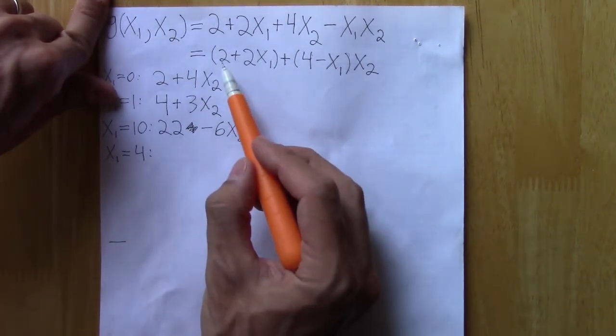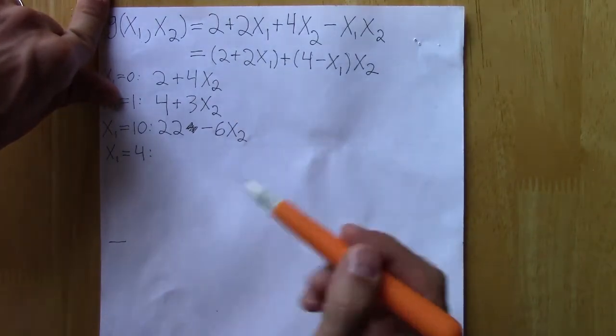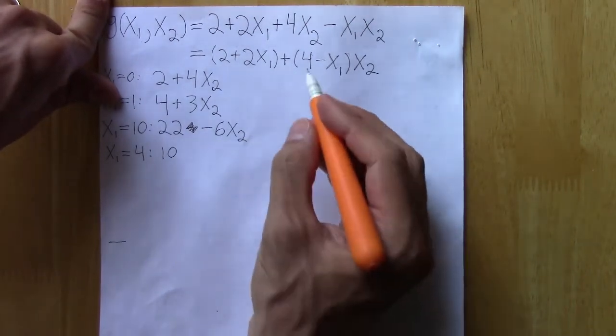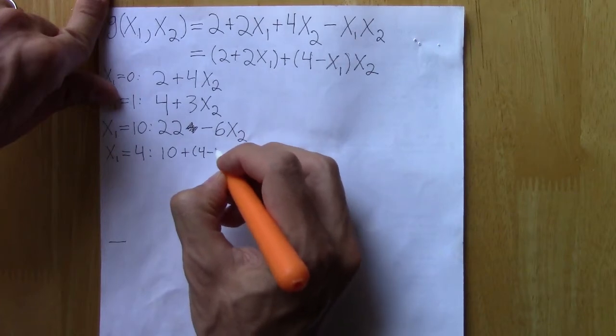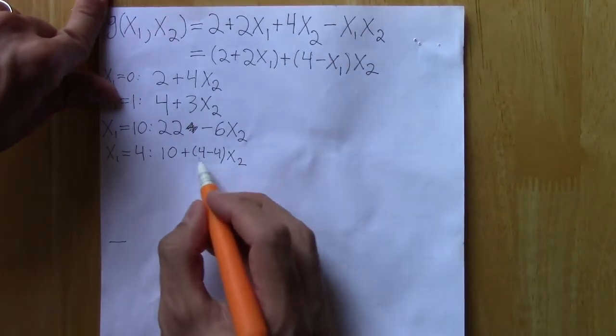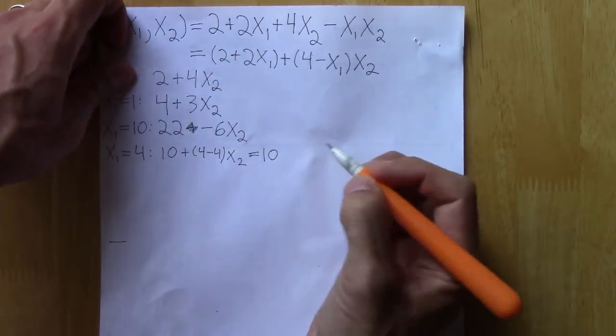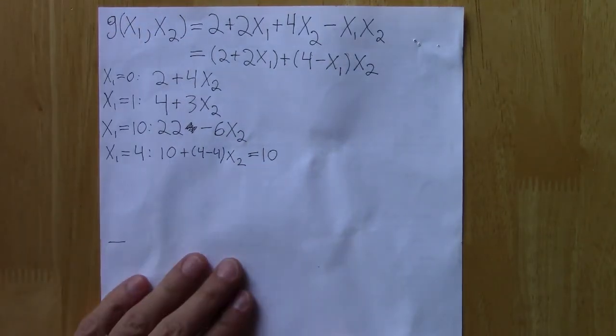In that case, we'll get 2 plus 2 times 4, or 2 plus 8 for the intercept. And then 4 minus 4 for the slope, which is 0. So we'll just get a constant, this zero slope with respect to x₂.